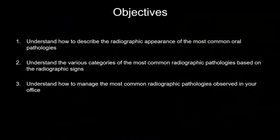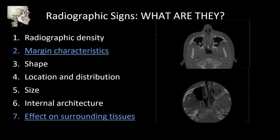Some objectives for today: how to describe the radiographic appearance of the most common oral pathologies you might see in your office; the various categories of disease based on radiographic signs; and how to manage some of those common radiographic pathologies. This covers cysts, benign tumors, and lesions of bone — things you may not quite remember from dental school days but are seeing in your office.